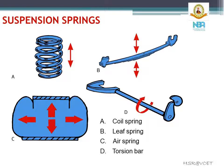The suspension spring stores energy when deflected by a bump on the road. On releasing, it expends the stored energy vibrating with some frequency. The broad classification of springs includes steel springs, rubber springs, and air springs. Under steel springs, it is further classified into leaf springs, tapered leaf springs, coil springs, and torsion bars.